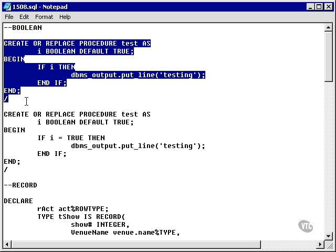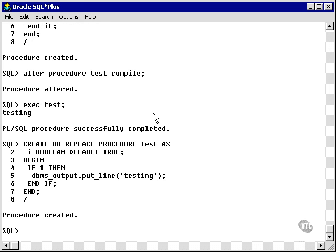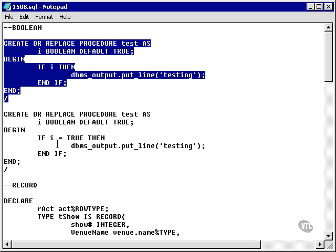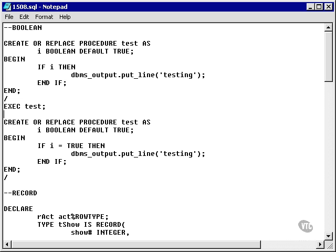Here we have a procedure which I'm going to copy into SQL Plus and compile. Now, then I'm going to execute it. I've set the default value of this Boolean variable to true, which means that as soon as it's created or accessed, it gets a value true. Therefore, when I execute this procedure,